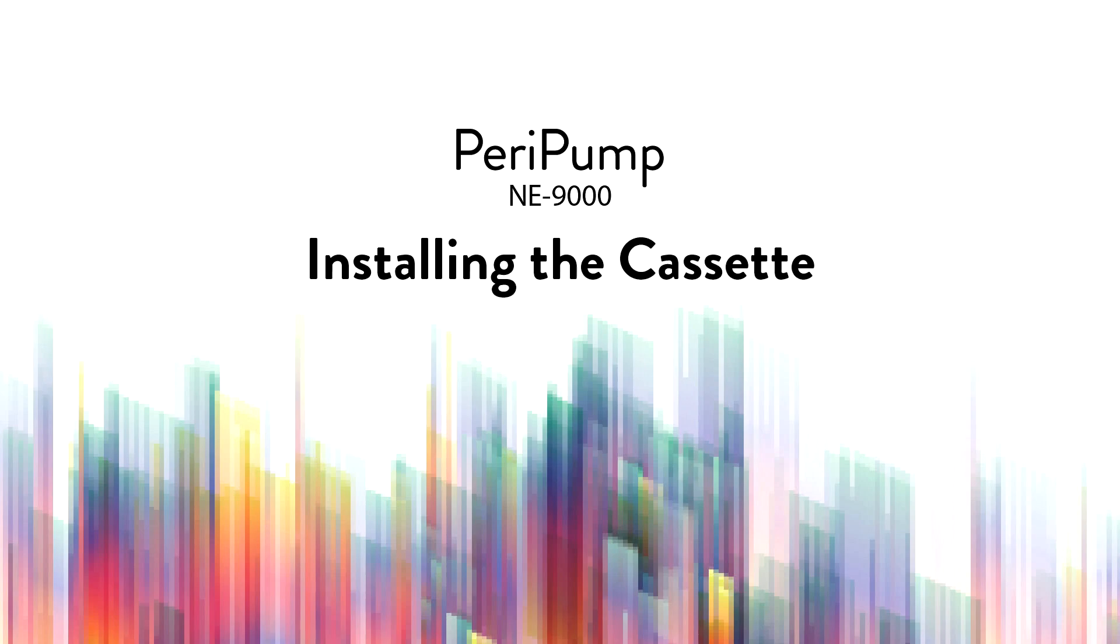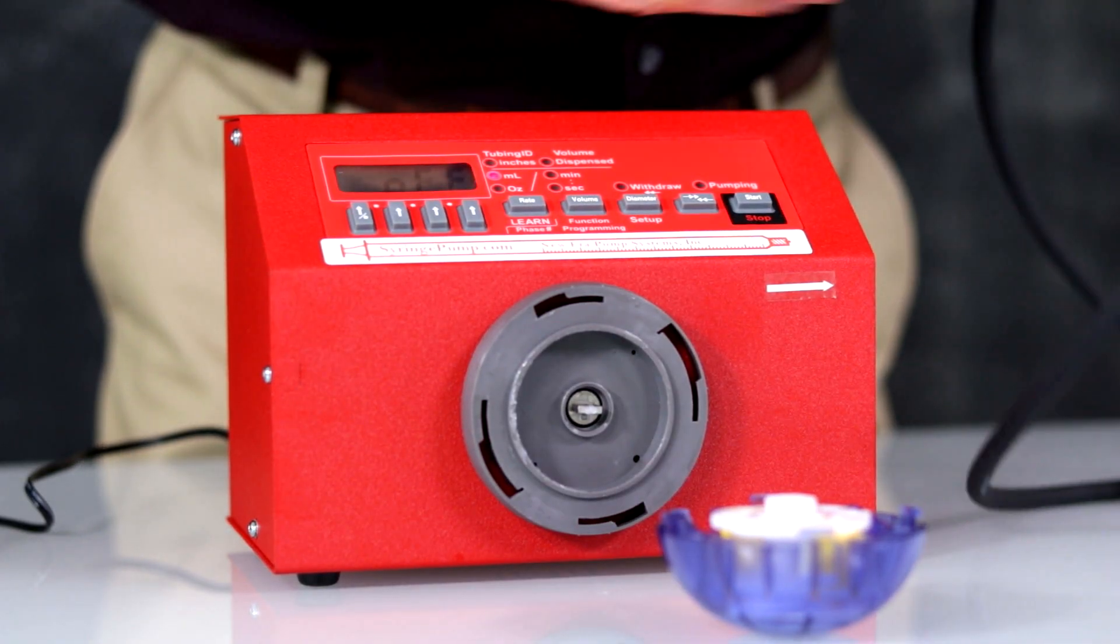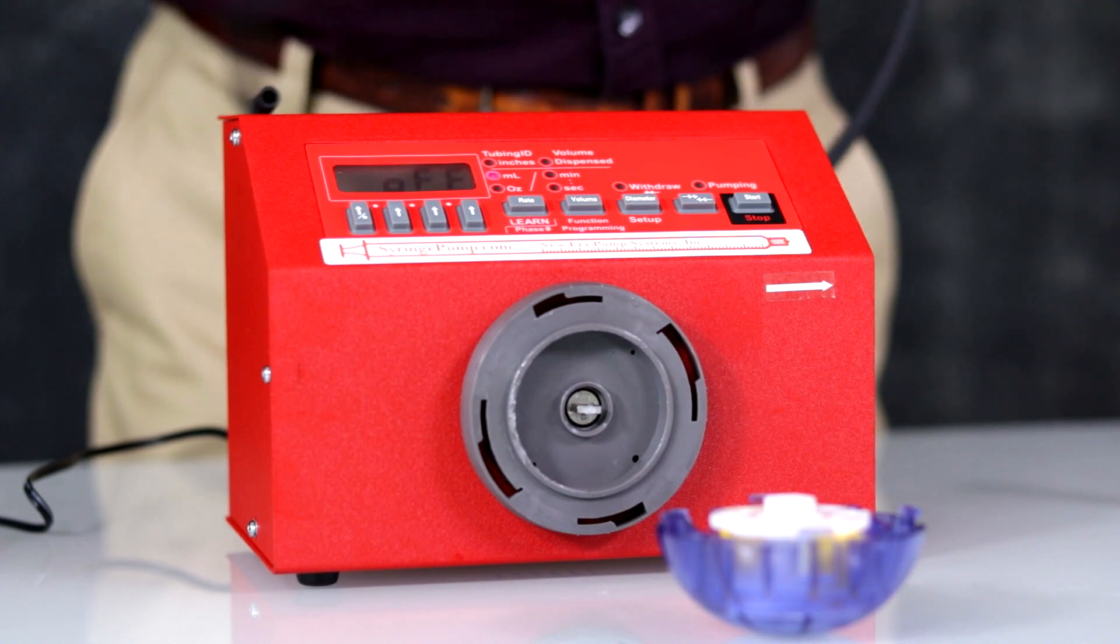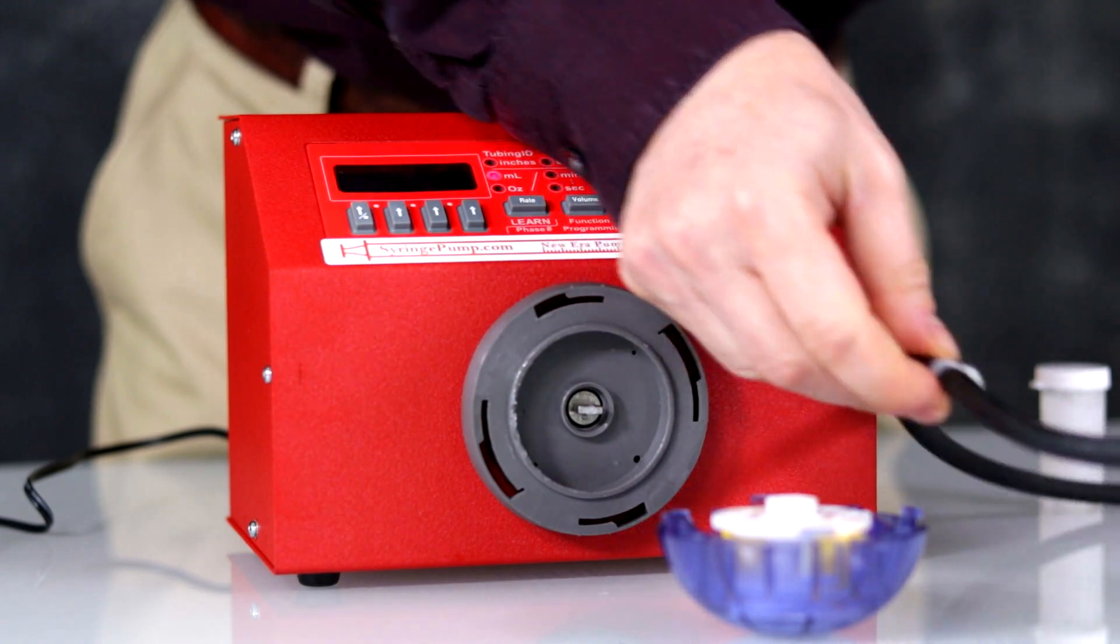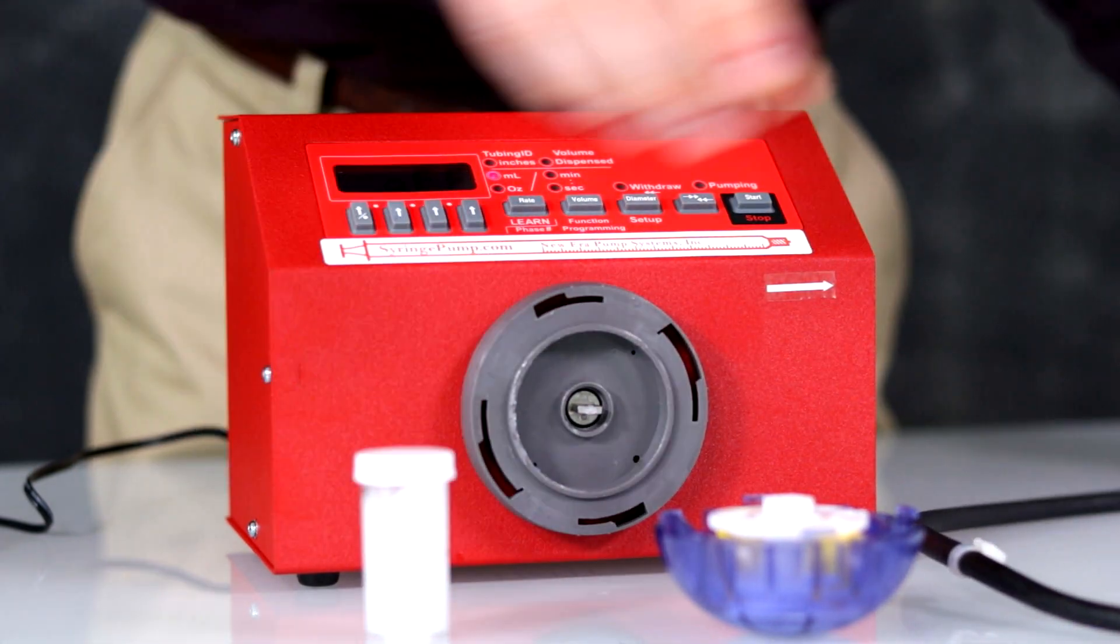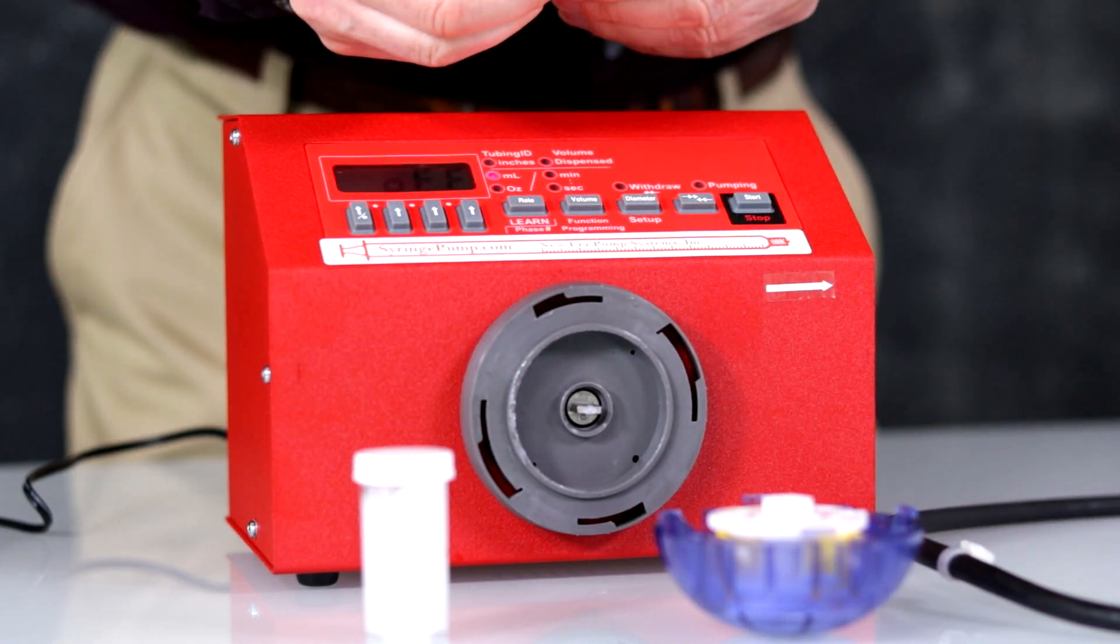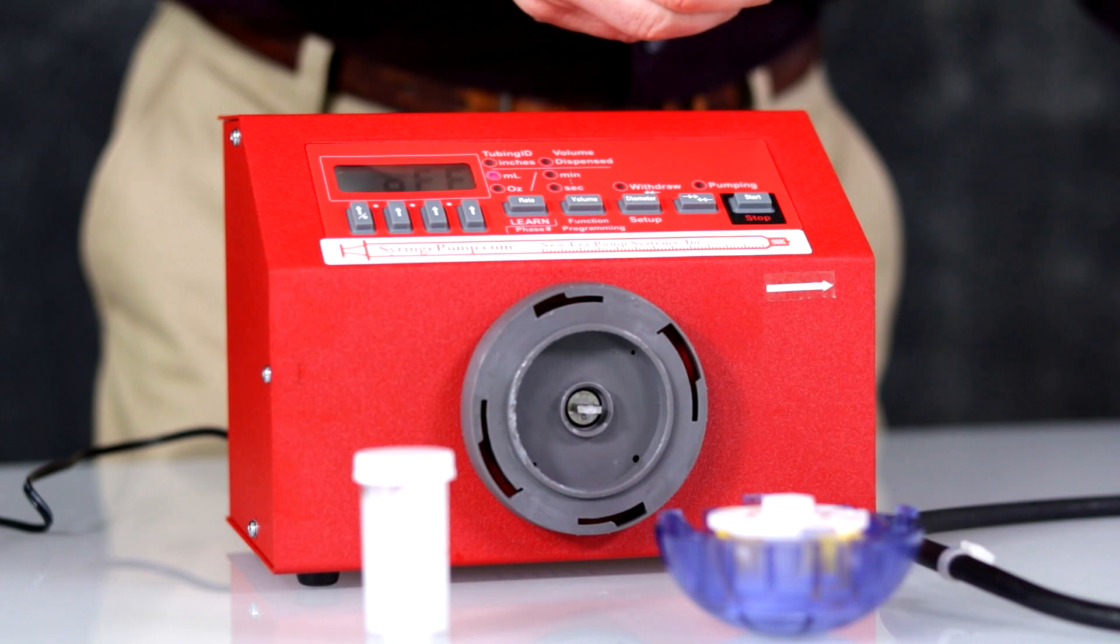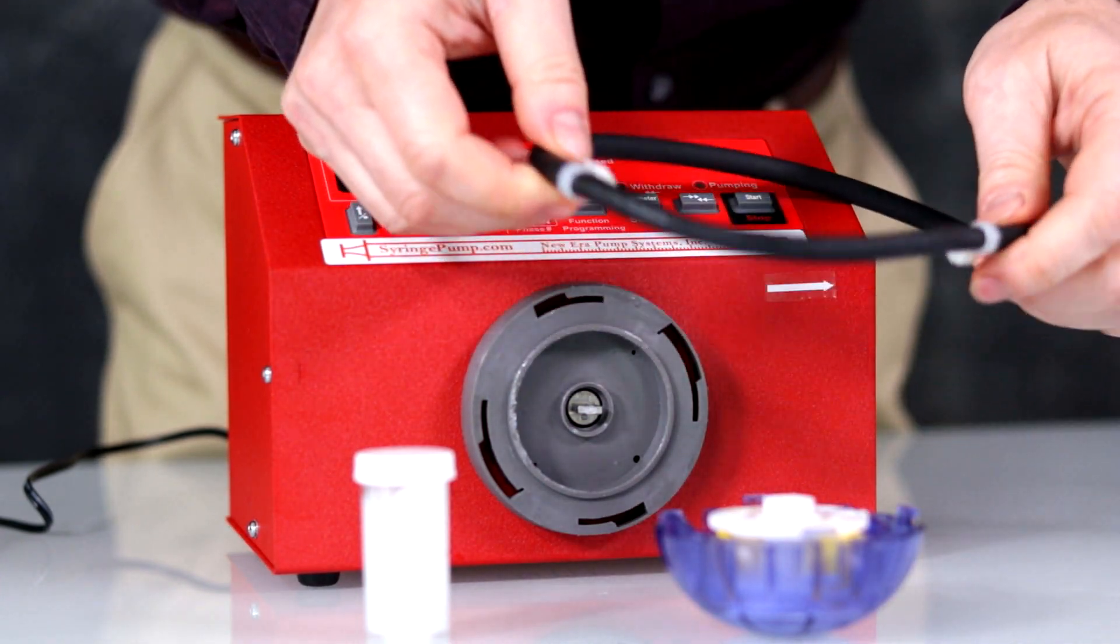Installing the cassette. The NE9000 comes with a starter kit including cassette, 3/16th ID tubing with connectors already attached, a vial of grease and two extra zip ties. The tubing has the zip ties attached both in the same direction.